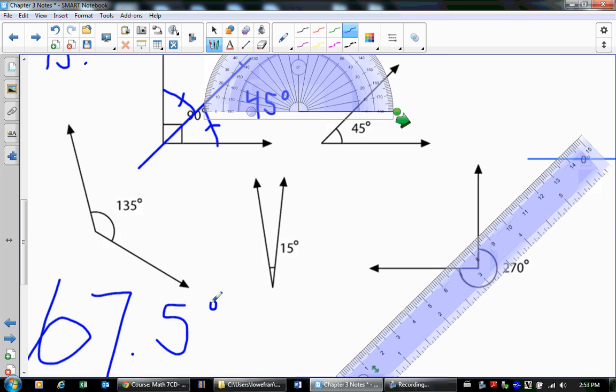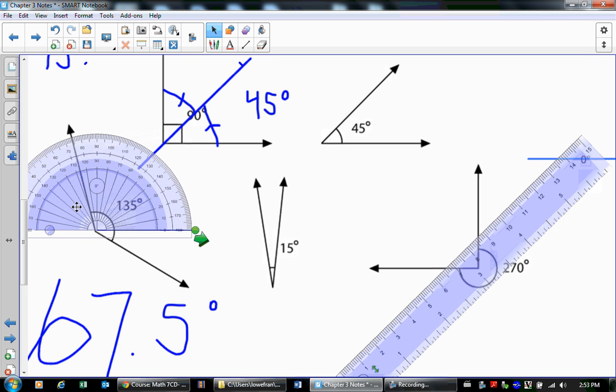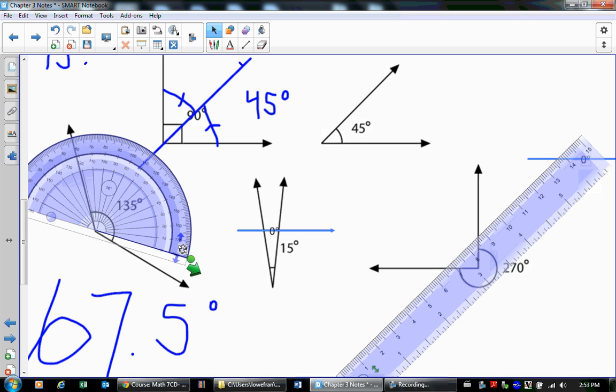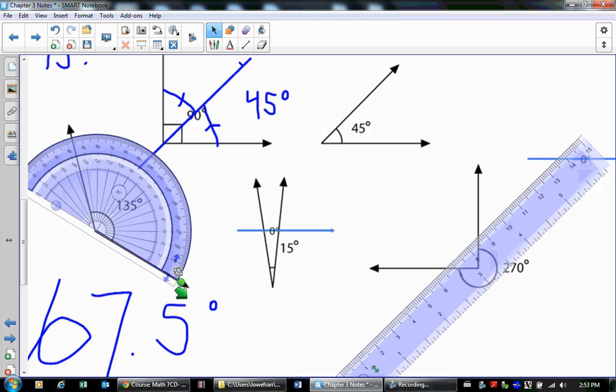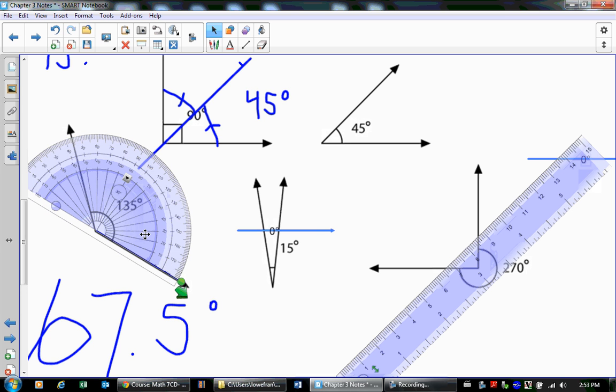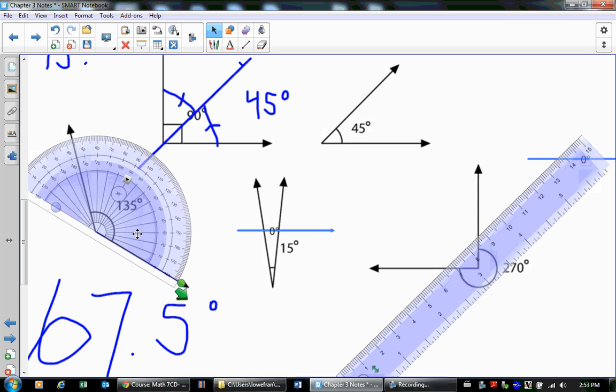In case you're having trouble seeing things, this should help. So once again we take our protractor and we put our crosshairs right on there. And we put that bottom edge of the protractor right on the vertex. Right on the vertex. There we go. Perfect.